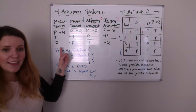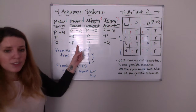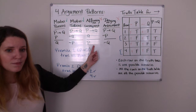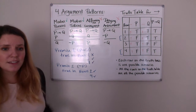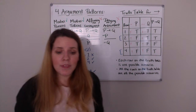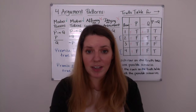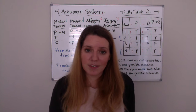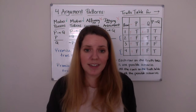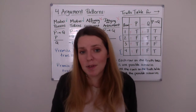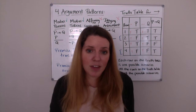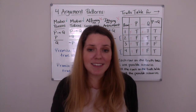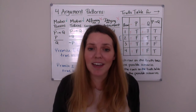So to summarize: modus ponens is valid because of row one; modus tollens is valid because of row four; affirming the consequent is invalid because of row two; and denying the antecedent is also invalid because of row two. Hopefully that clarifies question nine from the homework and gives you a head start on using truth tables to test for validity. We're going to use truth tables for more complex arguments, so consult your book and notes, and please let me know if anything still doesn't make sense. Thank you.